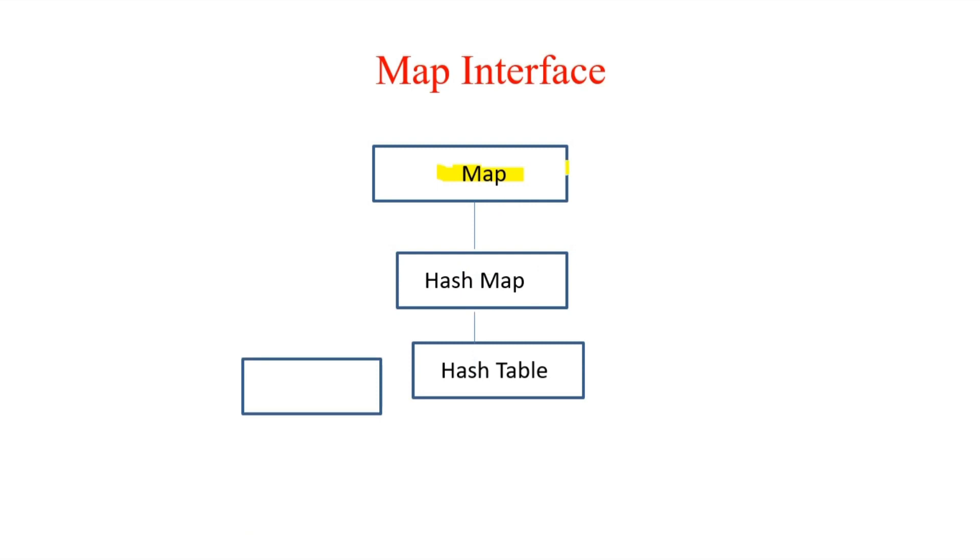The two classes which implement this Map interface are HashMap and HashTable. Now we have another interface which is SortedMap, and that particular SortedMap has an implementing class which is TreeMap, something similar to Set if you can recall.